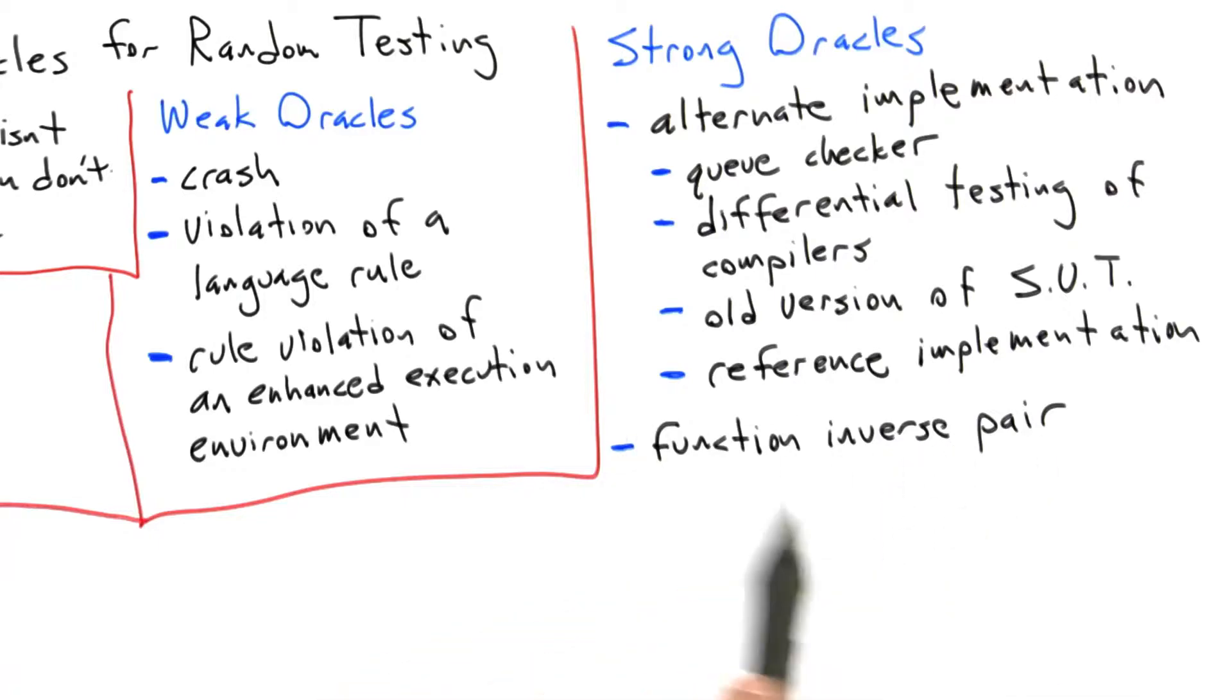The next kind of strong oracle that I'd like to talk about is what I would call a function inverse pair. We have available to us some sort of function and also its inverse as a pair, and we can use these as a pair to do strong checking of correct behavior of the software under test.